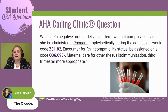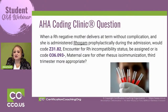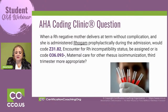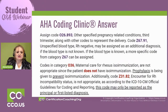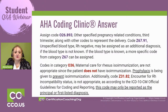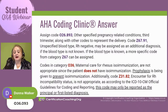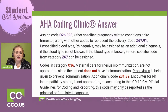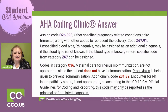The answer is O26.893, because that stands for other specified pregnancy related condition, third trimester, along with other codes to represent the delivery and standard delivery codes. The 'other' signifies the code set has a definition but didn't have a specific code for it at that time. Along with that, you also code Z67.91 — unspecified blood type — because we know they're Rh negative but we don't know if they're AB, B, or O.